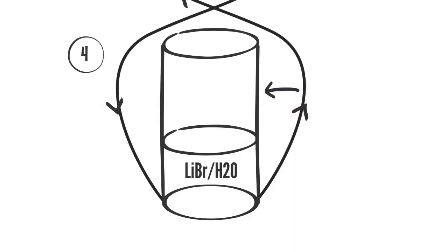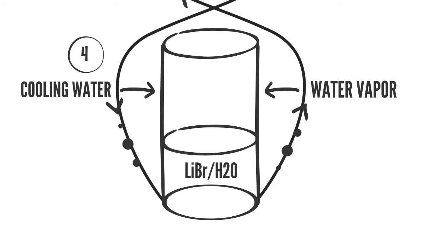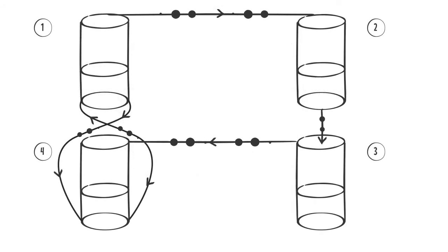The fourth phase contains, as in the first phase, a solution of lithium bromide. The third phase water vapor is sucked into the fourth phase and absorbed again in the solution of lithium bromide.